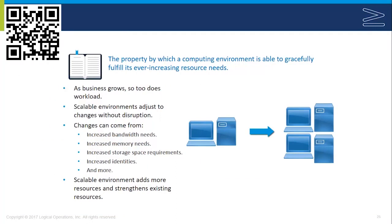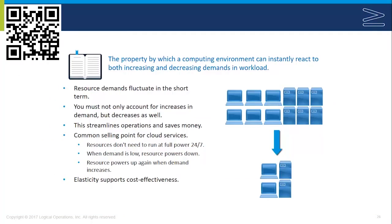Scale up allows you to add more resources to a system — increasing the power of those resources. Scale out allows you to add more systems and in doing so, more resources. Scaling out will usually be the one that is used because it's a little bit easier to implement. This scaling out can happen automatically. When we get into cloud computing, one of the common terms used is elasticity, which technically would apply to virtualization setups as well.